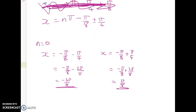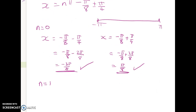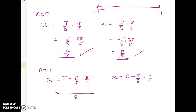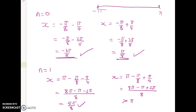Now n = 1: x = π − π/8 − π/4 = (8π − π − 2π)/8 = 5π/8 — that's in the domain, tick. The other value is (8π − π + 2π)/8 = 9π/8 — that's greater than π, so it's outside the domain, cross. Then n = −1: x = −π − π/8 − π/4 gives a value less than negative π, so that's out. But x = −π − π/8 + π/4 = (−8π − π + 2π)/8 = −7π/8 — that just sneaks in, tick.